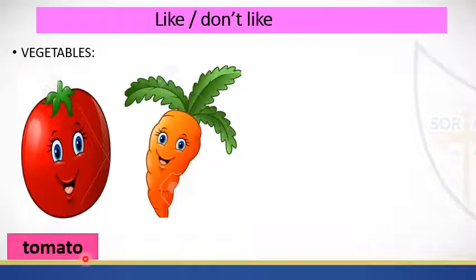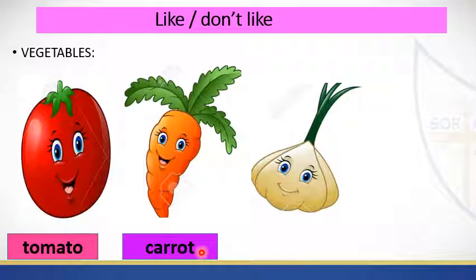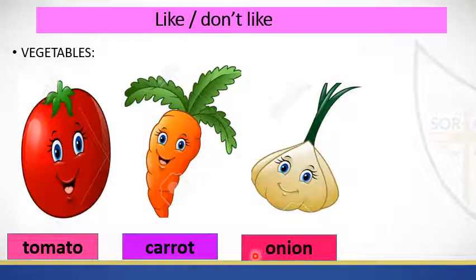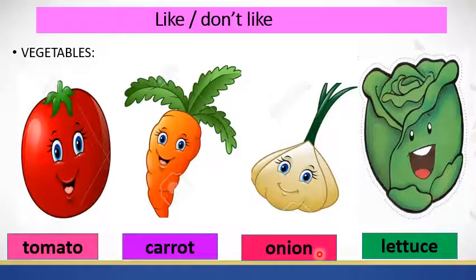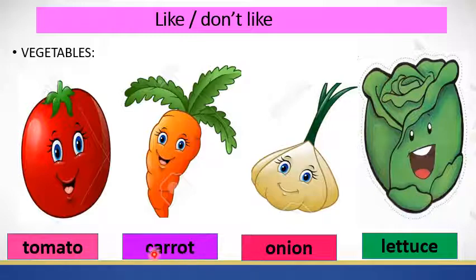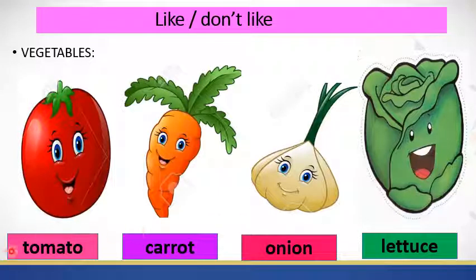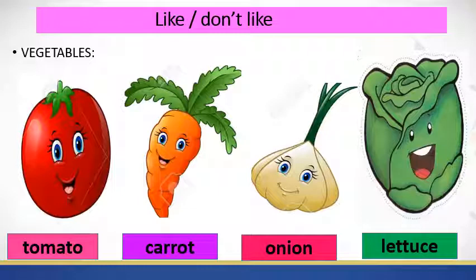Look at another picture. What is this one? This is a carrot. Carrot. Onion. Onion. Lettuce. One more time, please. Tomato. Carrot. Onion. Lettuce. Obviously, there are more vegetables, but today we're only gonna learn four vegetables.